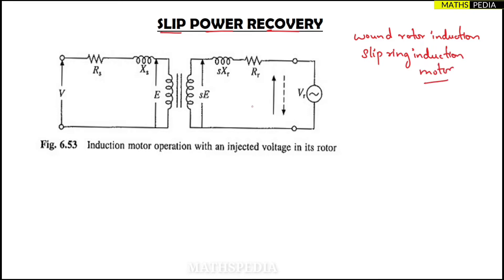You can differentiate the circuit into two sides: one is the stator and another is the rotor. The stator parameters have subscript 's' and rotor parameters have subscript 'R'. VR is the external voltage source injected to the rotor side — an injected voltage source.